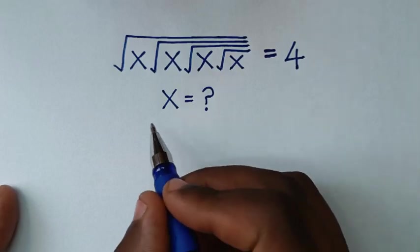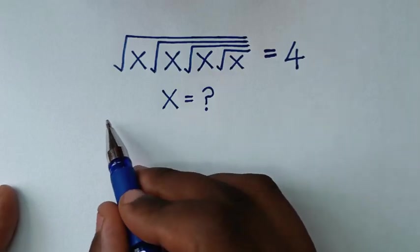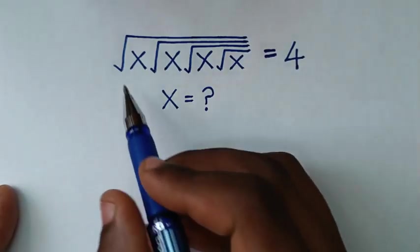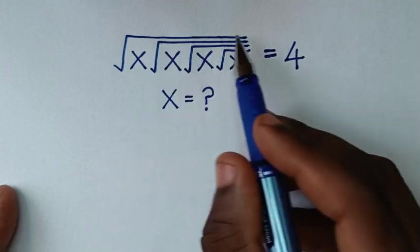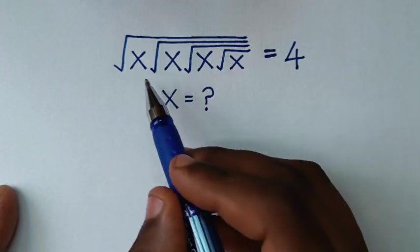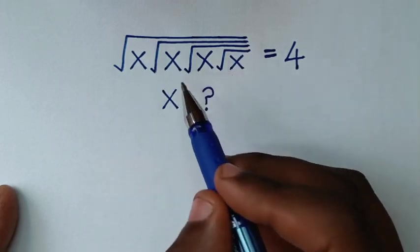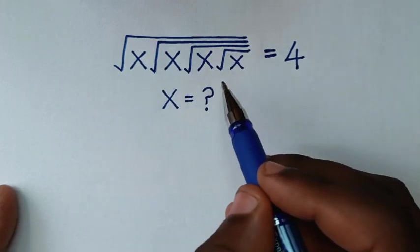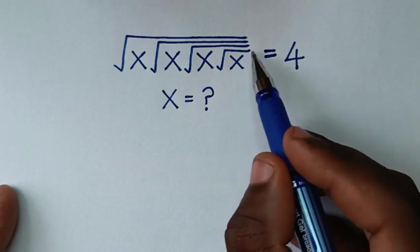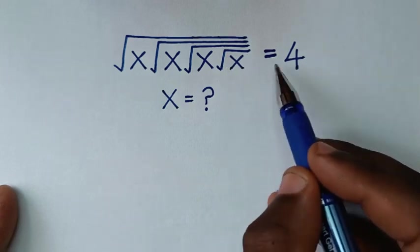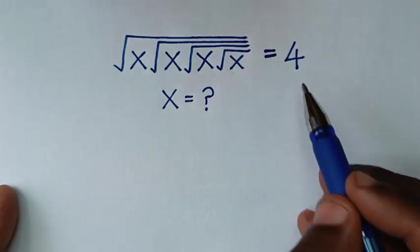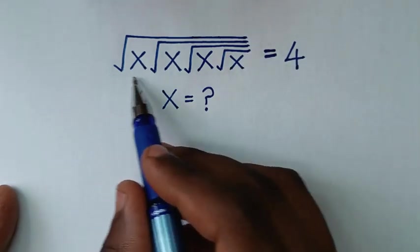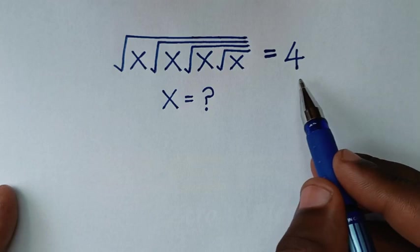Hello, you are welcome to solve this math problem, which is square root of x under square root of x under square root of x is equal to 4. To find the value of x from this equation.